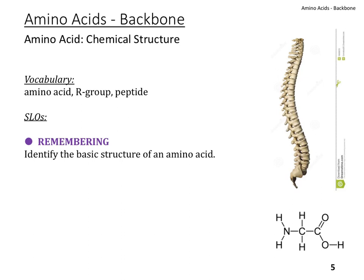Here we have a little analogy to think about the backbone of a vertebrate, maybe a human. If you think about that backbone, there are many little units all in a row and they're connected to each other. Just like that, in a polypeptide chain or a protein, we have many small units that are all in a row and connected to each other.